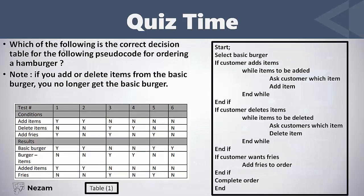The second question: which of the following is the correct decision table for the following pseudo-code for ordering a hamburger? Note: if you add or delete items from the basic burger, you no longer get the basic burger. He gives us four decision tables for this code and we want to know which one is correct.